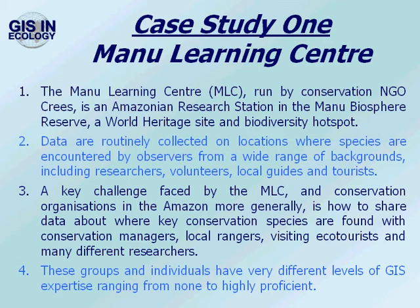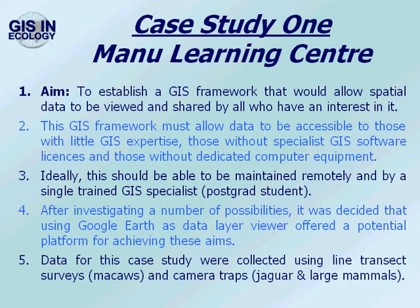A key challenge faced by the MLC and conservation organizations in the Amazon more generally is how to share data about where key conservation species are found with conservation managers, local rangers, visiting ecotourists and many different researchers. These groups and individuals have very different levels of GIS expertise, ranging from none to highly proficient. The aim of this case study was to establish a GIS framework that would allow spatial data to be viewed and shared by all those who have an interest in it.